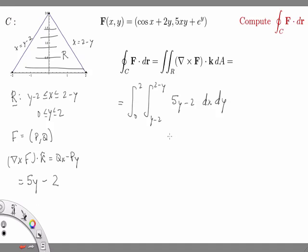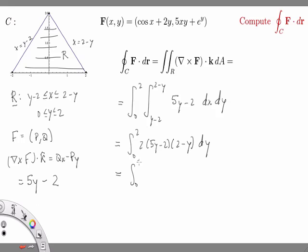Switching from the curve integral to the double integral is the main new mathematics in this example. Now we compute the double integral. From 0 to 2, since 5y minus 2 is constant with respect to x, the inner integral gives (2 minus y) minus (y minus 2), which simplifies to 2 times (2 minus y). So we get the integral from 0 to 2 of 2 times (5y minus 2) times (2 minus y) dy.